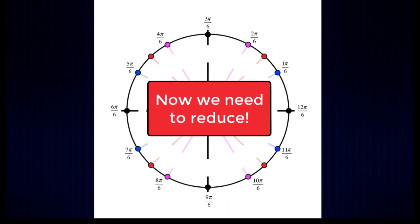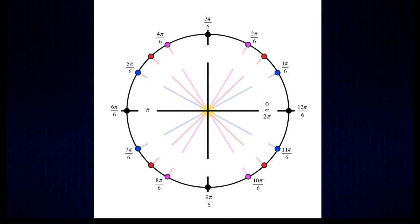Now these angles are not reduced, but once we do reduce them, we get the unit circle angles that we're used to seeing.